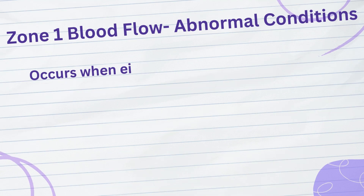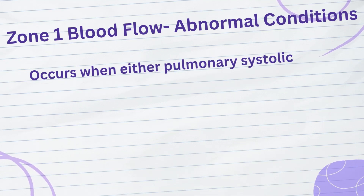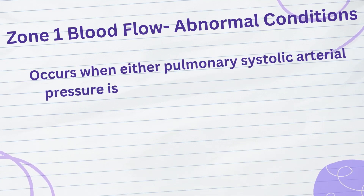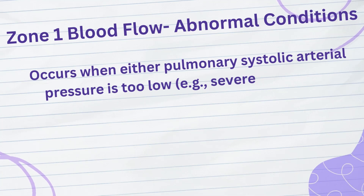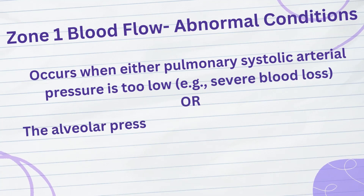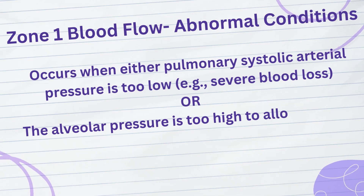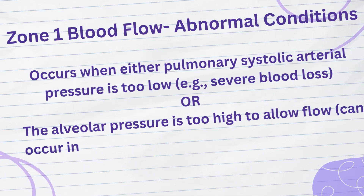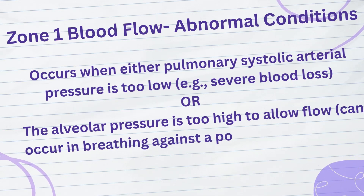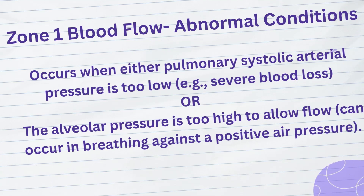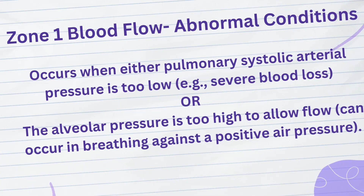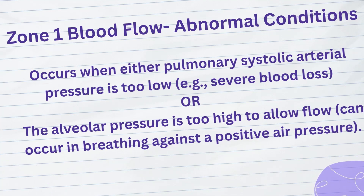Zone 1 blood flow occurs only under abnormal conditions. Zone 1 blood flow, which means no blood flow at any time during the cardiac cycle, occurs when either the pulmonary systolic arterial pressure is too low or the alveolar pressure is too high to allow flow. For instance, if an upright person is breathing against a positive air pressure so that the intra-alveolar air pressure is at least 10 mm Hg greater than normal but the pulmonary systolic blood pressure is normal, one would expect zone 1 blood flow — no blood flow — in the lung apices.